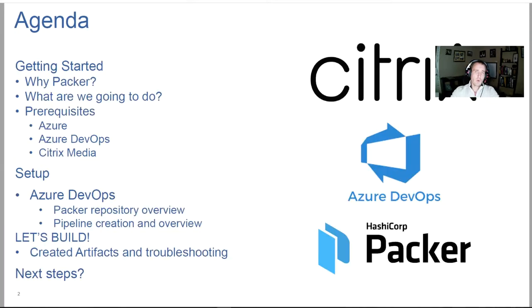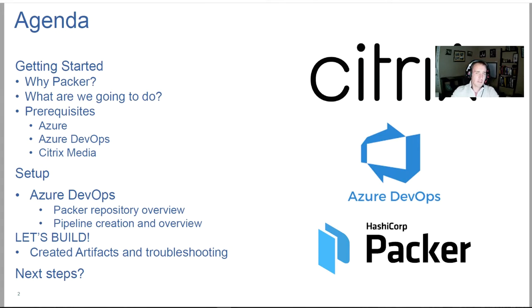Here's a little overview of what we'll be doing today. We'll go over what Packer is and why we're going to be utilizing it, what we'll be doing with Packer and the pipelines, some prerequisites for Azure and Azure DevOps, what Citrix binaries we'll need to download, and then getting into setup for Azure DevOps — the repository and creating the initial pipeline. Most of this presentation is demo-based. After we get our initial image built, we'll cover troubleshooting steps and artifacts — don't worry too much about those right now, we'll get into them during the presentation.